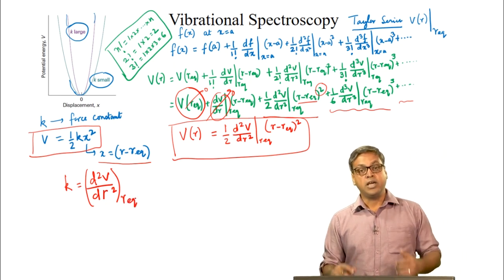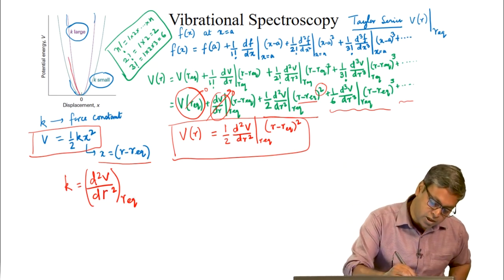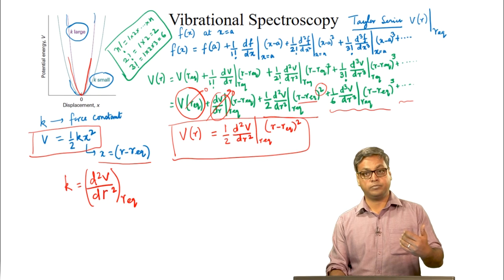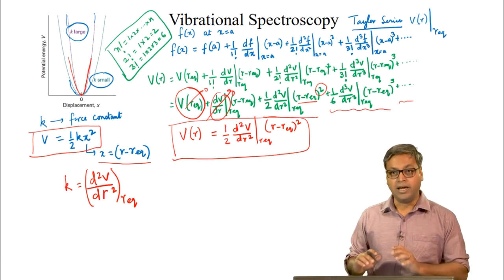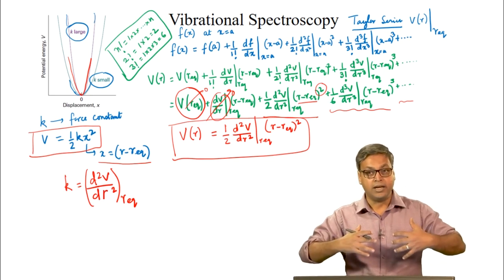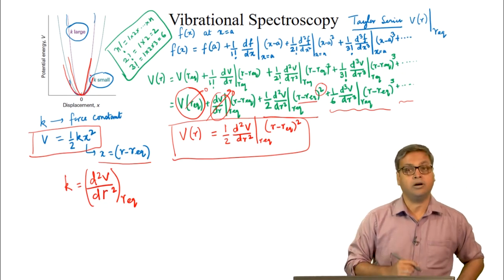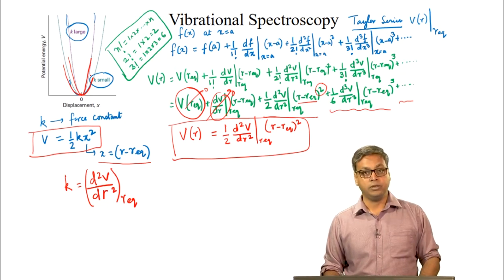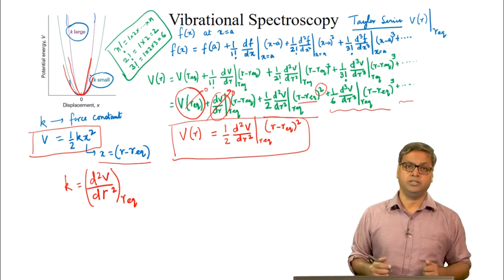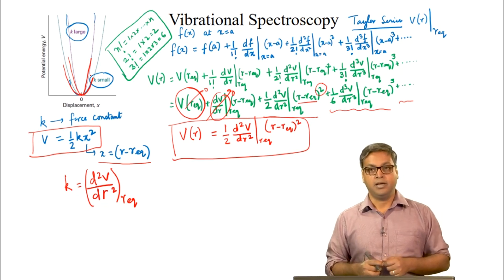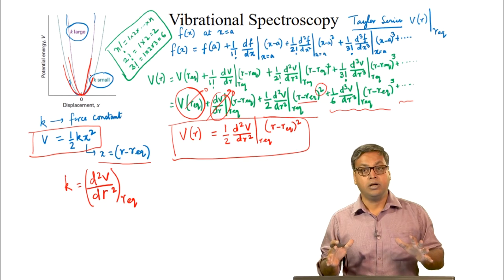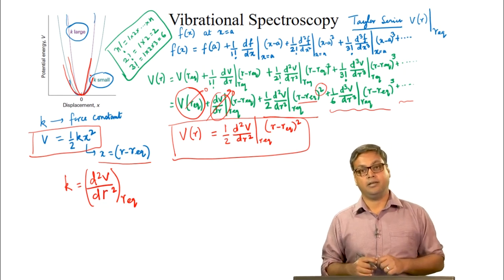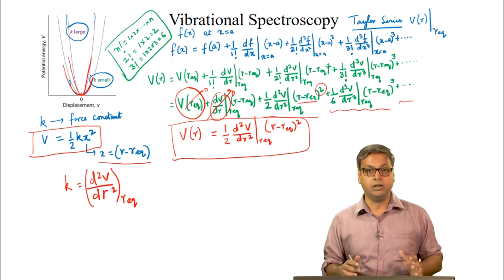Comparing this with V = half kx² where x = r − r_eq, we can identify that k equals d²V/dr² at r_eq. In other words, if the potential energy is sharply curved at the minimum, k will be large. If the potential energy is wide and shallow around the minimum, k is small. If we can calculate the potential energy at any bond length, we can determine the curvature and thus calculate the force constant k and the vibrational frequency.